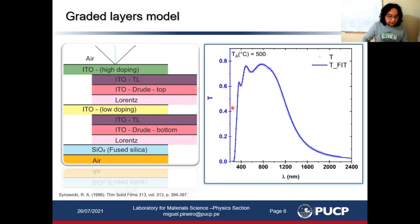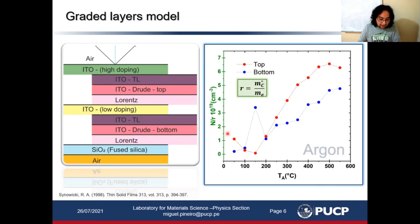Now I show the transmittance as a function of wavelength, where the experimental data is shown as small triangles and the solid line is the transmittance fit. The fit was obtained using the previous model, the Drude model and Tauc-Lorentz model. We found the behavior of carrier density divided by a constant R for both layers as a function of annealing temperature. R is the effective band mass divided by electron mass.